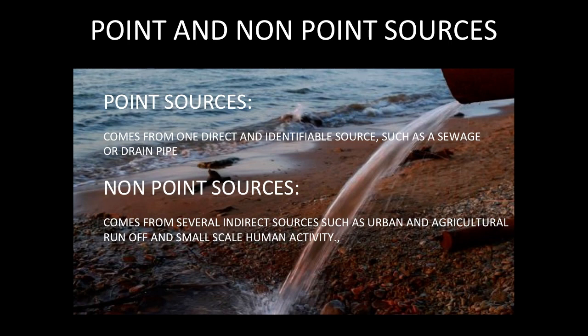So there are two types of pollution sources. We call them point and non-point sources in environmental science. Point sources come from one direct and identifiable source such as a sewage or drain pipe, and non-point sources come from several indirect sources such as urban and agricultural runoff and small-scale human activity. This identifies how things are flowing into our water sources and where they're coming from.